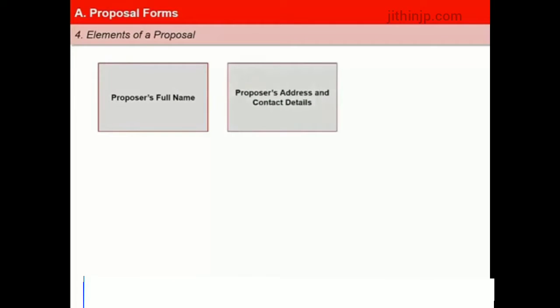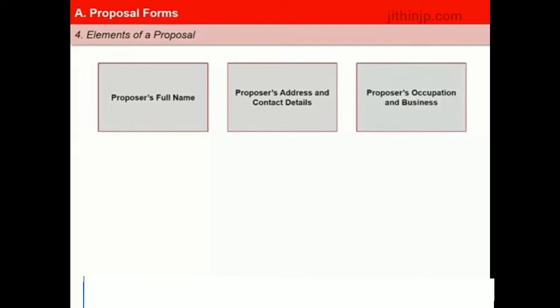Now let us discuss the elements of a proposal. In some cases like health and personal accident insurance, the proposer's profession, occupation or business are of importance as they could have a material bearing on the risk.